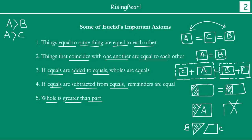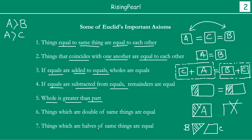Now, the sixth axiom says: things which are double of the same thing are equal. If you start with A equal to B, and you make it two times A and two times B, then they will also be equal. Finally, the seventh axiom that we wanted to discuss before completing today's episode is: things which are half of the same thing are equal. So again, if you start with A equal to B, you make each into half, then those half portions will again be equal.